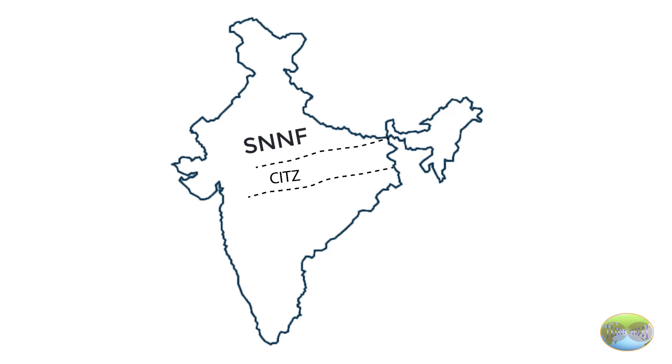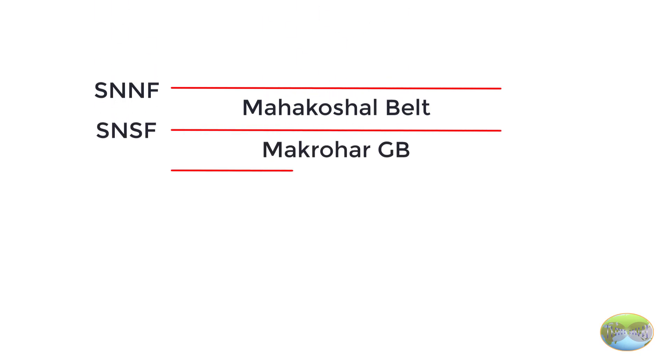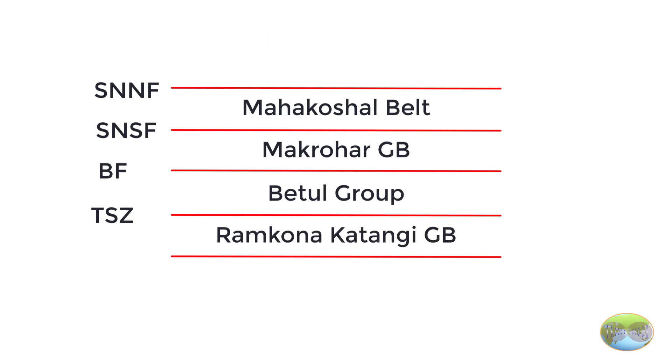Let us first have a look at the tectonic units present within this zone. The northern boundary of CITZ is bounded by Son-Narmada North Fault. Mahakosal Supercrustal Belt is present to the south of it, followed by Son-Narmada South Fault, Makrohar Granulite Belt, Balrampur Fault, Betul Group, Tan Shear Zone, Ramkona Katangi Granulite Belt, Saucer Group, Bandara Balagat Granulite Belt and finally Central India Shear Zone. That forms the southernmost boundary of CITZ.